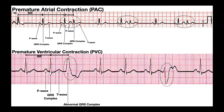The important thing to understand before we go to the PVC is to take a look at that premature QRS complex. It looks fairly normal — it's narrow, and it looks like a smaller version of the normal QRS complex. So relatively speaking, we could say it's more normal.